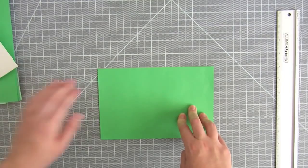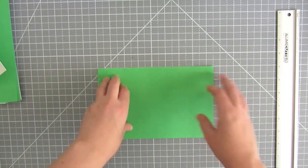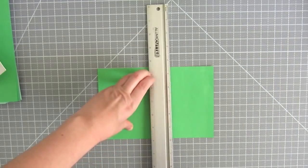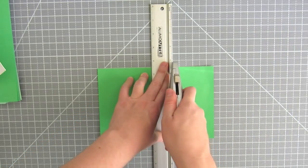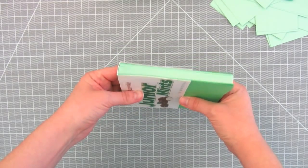Then, using a utility blade, cut each page to the same height as the cover. You can also cut two pages at a time to speed up the process. The cut pages should end up looking like this next to the cover.